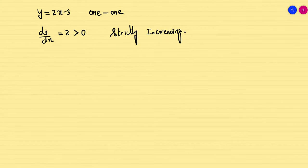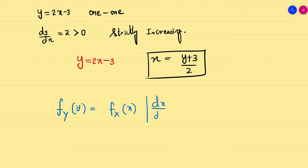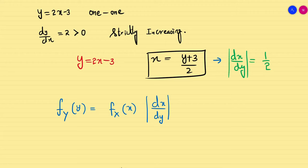Now I write x in terms of y. From y = 2x - 3, we get x = (y + 3)/2. Using the formula f_Y(y) = f_X(x) · |dx/dy|, we differentiate to find dx/dy = 1/2. Taking the modulus, it is still 1/2.